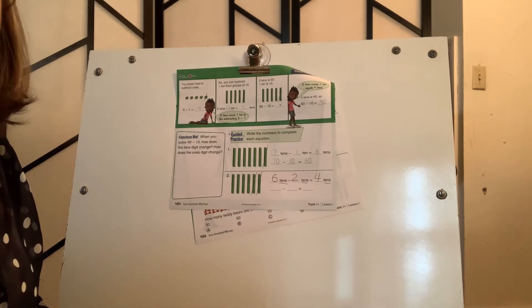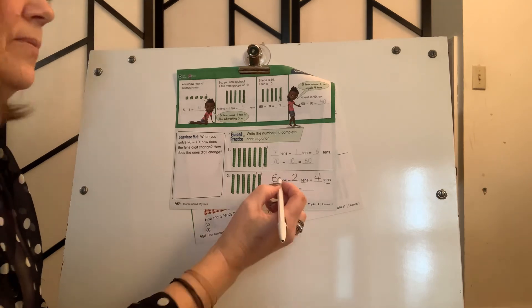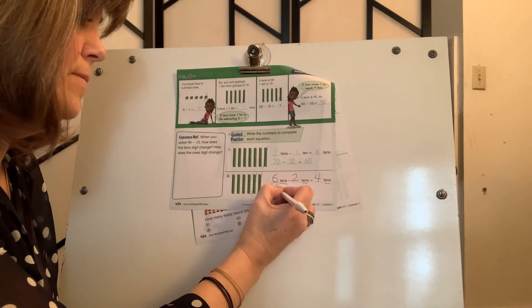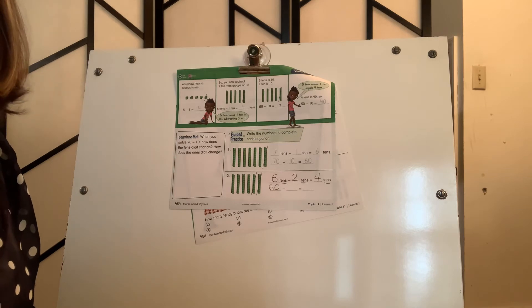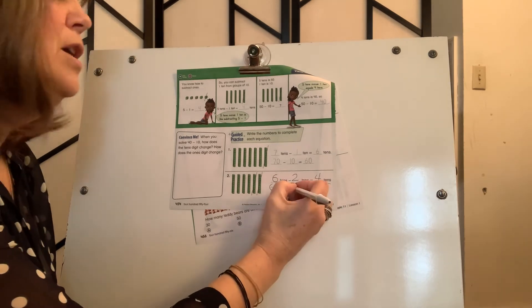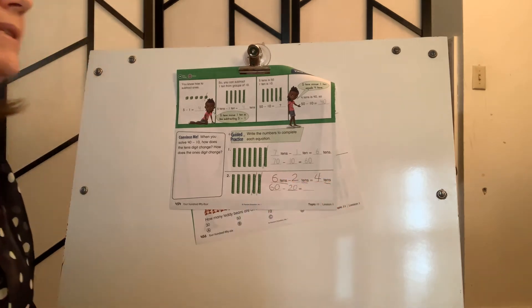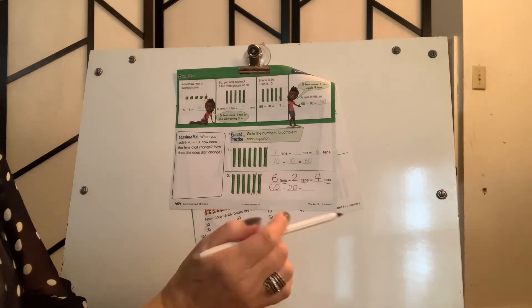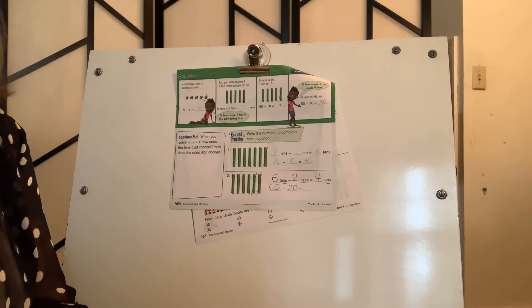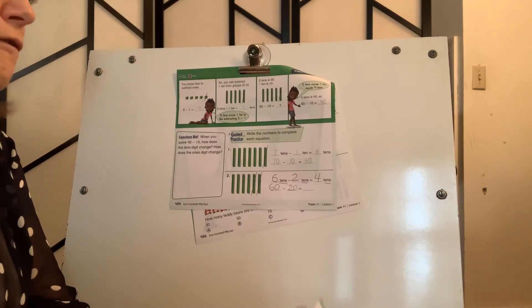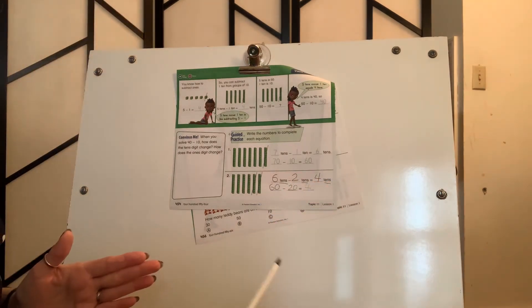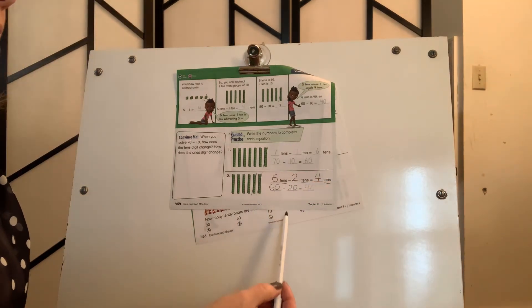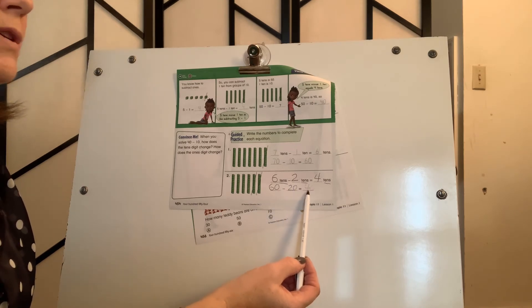All right. Faith, what is 6 10s? 60. Good girl. And Noel, I'm going to pick on your table today. What is 2 10s really equal to? 20. Good job. Liza, I'm going to go right around a circle at your table. What is 4 10s really equal to? 40. Good job. All right. Let's read that sentence together. 60 minus 20 equals 40.